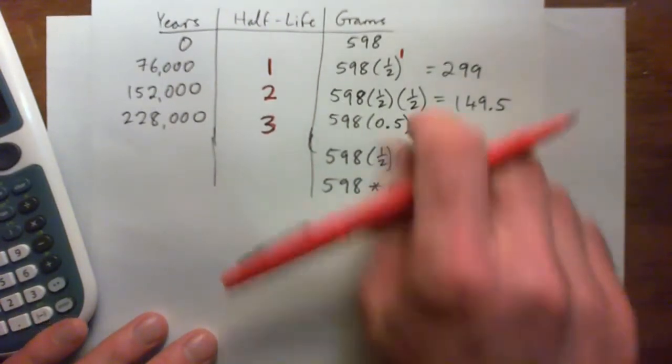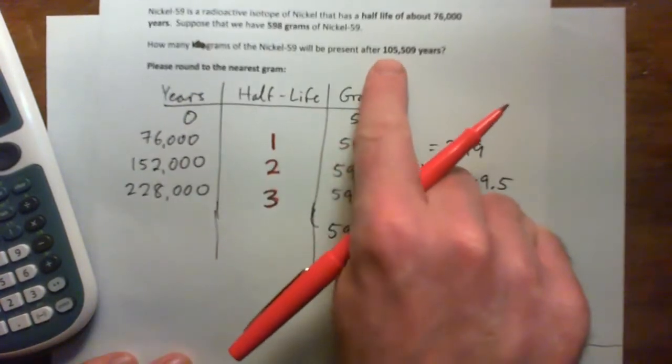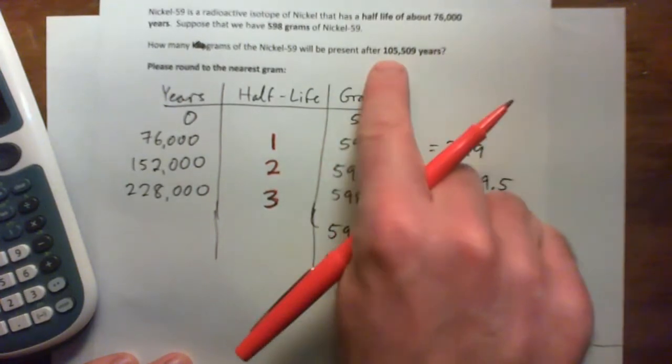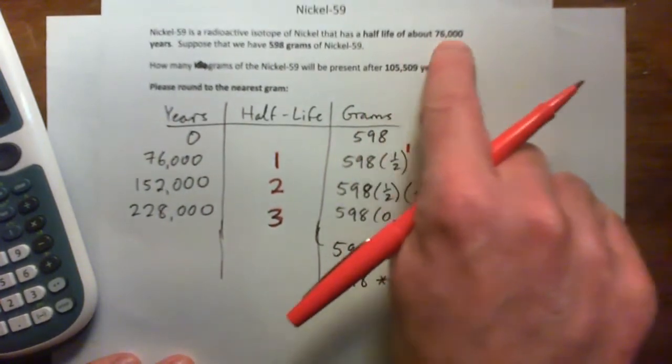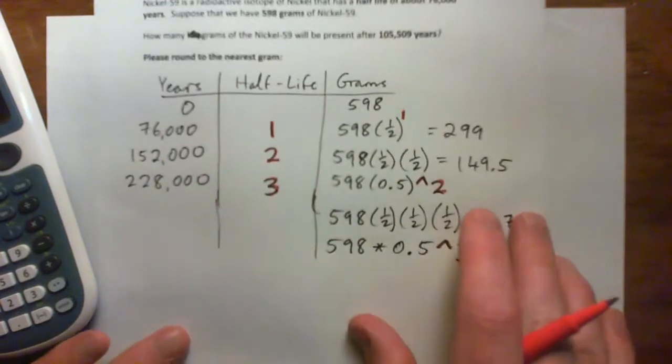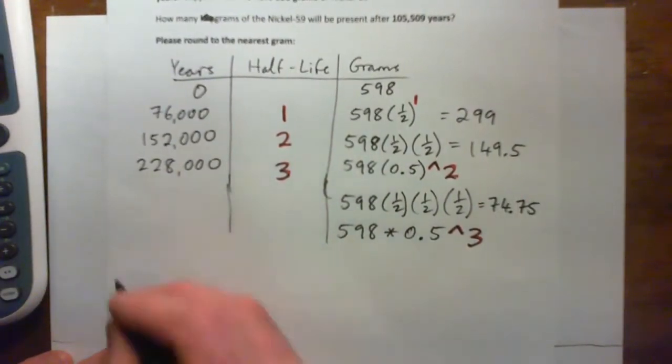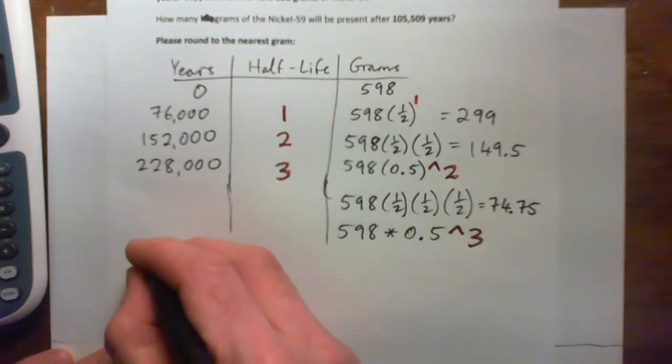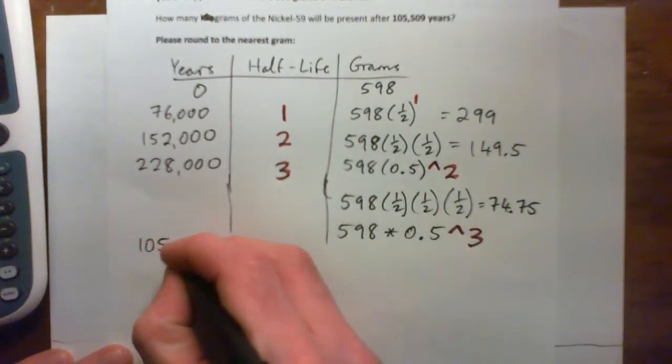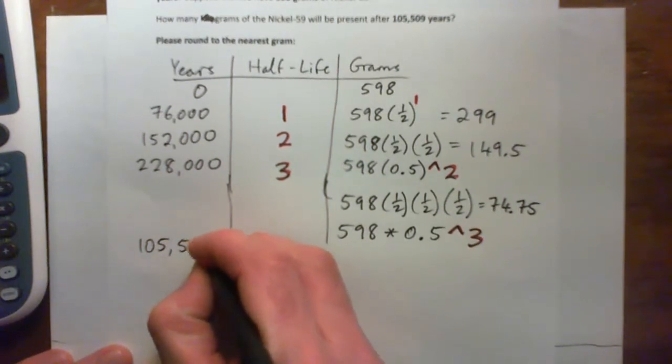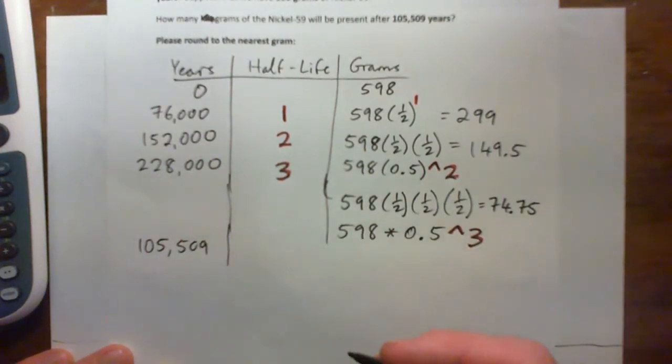But what we need to figure out is how many half-lives is this. Well, 76,000 is one half-life. How many half-lives is that? So what we do is we go, we got 105,509 years, right? How many half-lives is that?